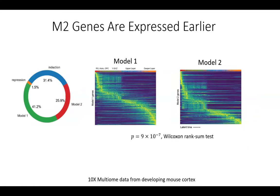We looked at functional annotations of these genes. We couldn't find many significant gene ontology terms, but Model 1 genes were slightly enriched for transcription factors and Model 2 genes were slightly enriched for cell cycle genes. Notably, Model 2 genes tended to be expressed earlier — cells with earlier inferred latent time had higher expression of Model 2 genes — possibly reflecting different gene regulatory mechanisms for genes needed early versus late in cell fate specification.